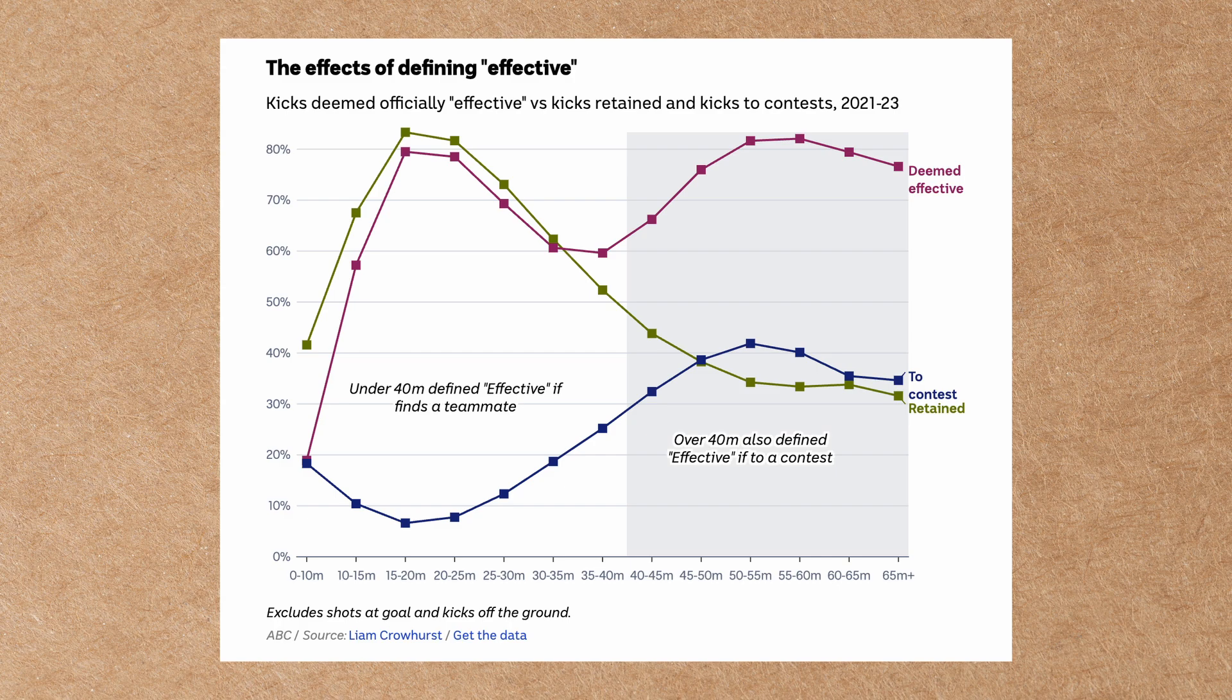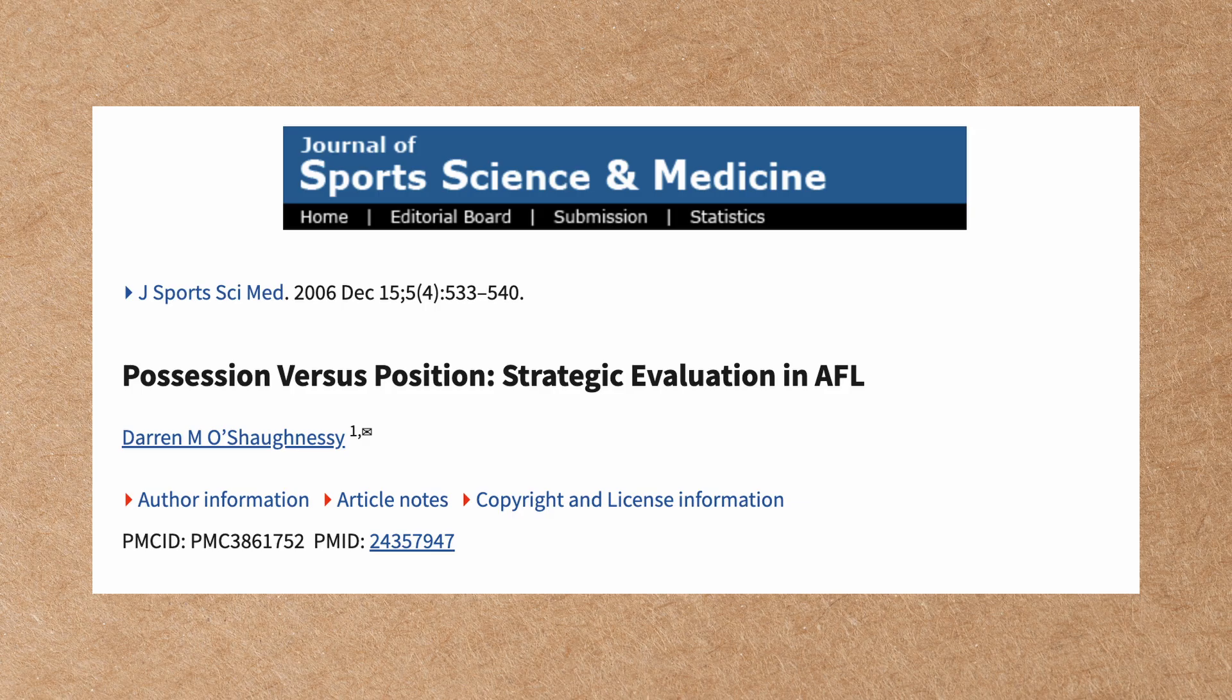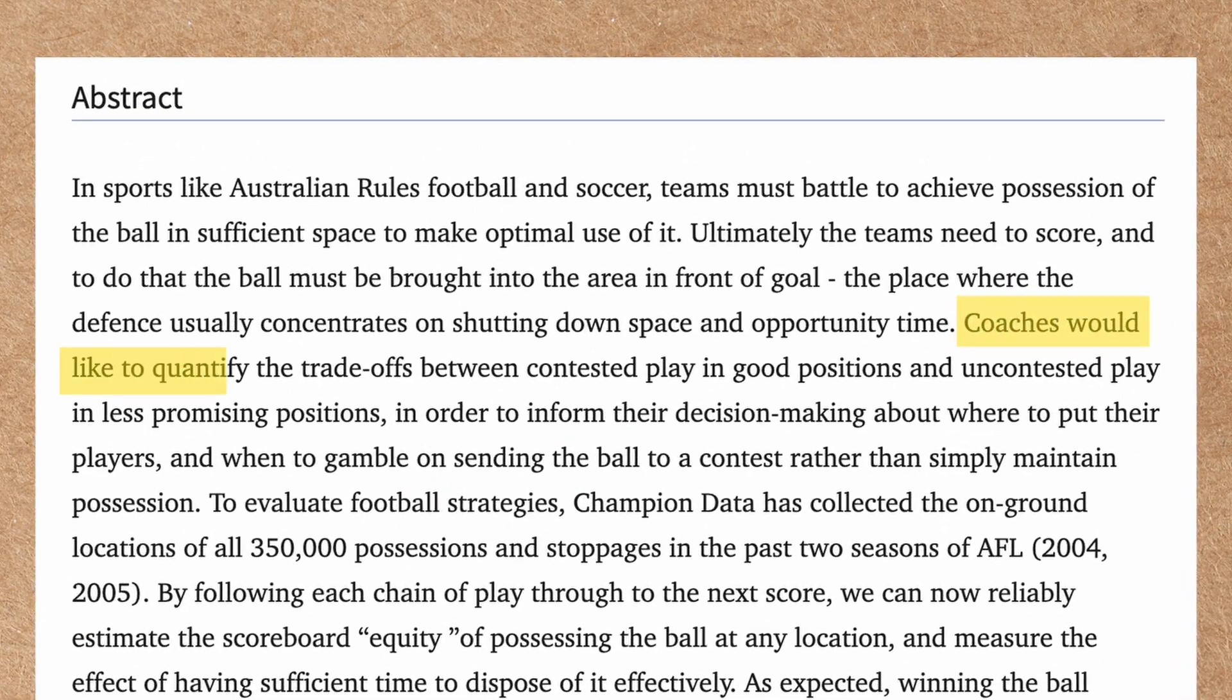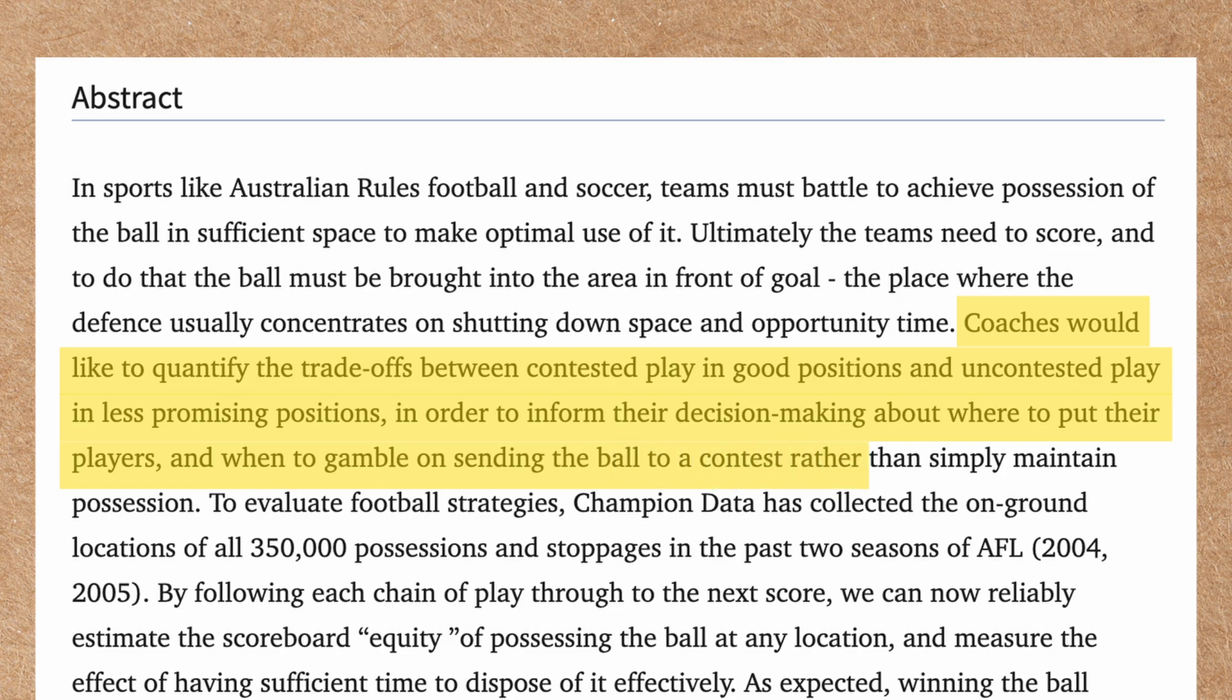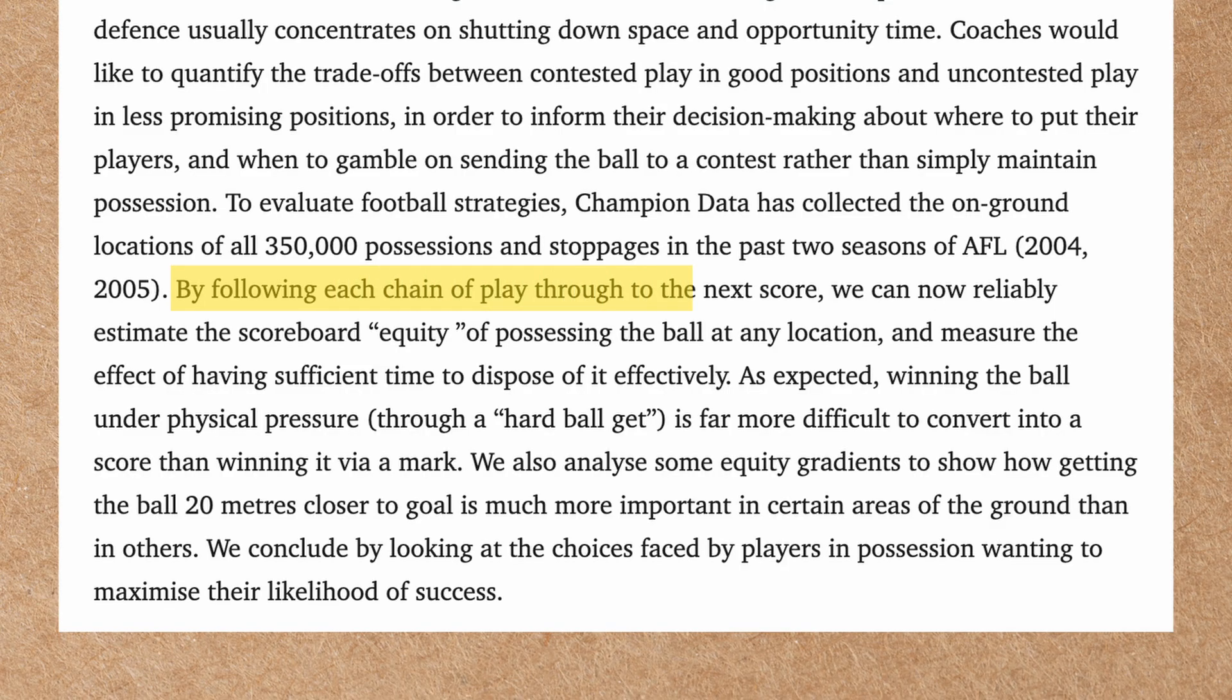We also got to see some examples of the least and most threatening kicks, which led me to thinking about a paper published by Darren O'Shaughnessy in 2006 called Possession vs. Position, where he introduced the concept of field equity. The abstract states that coaches would like to quantify the trade-offs between contested play in good positions and uncontested play in less promising positions in order to inform their decision-making about where to put their players and when to gamble on sending a ball to a contest rather than simply maintaining possession.